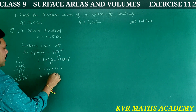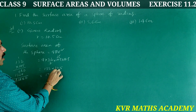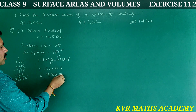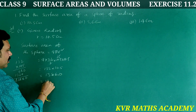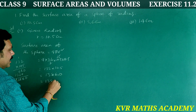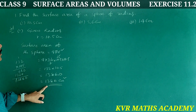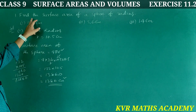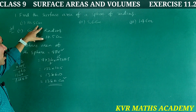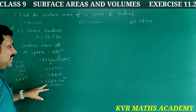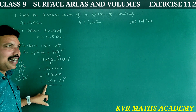That equals 1386. So surface area of the sphere of radius 10.5 centimeters is 1386 centimeters square.